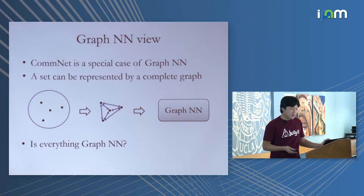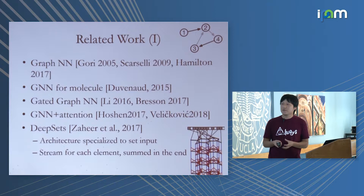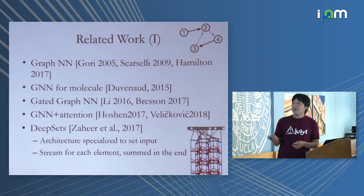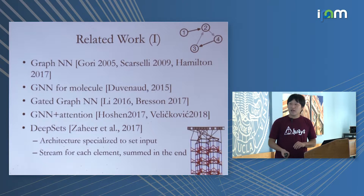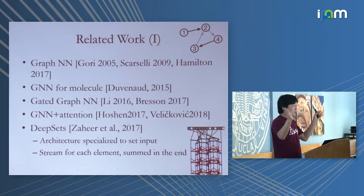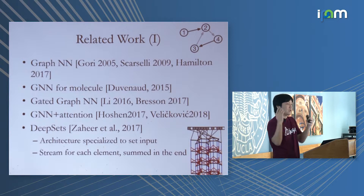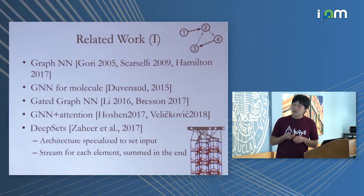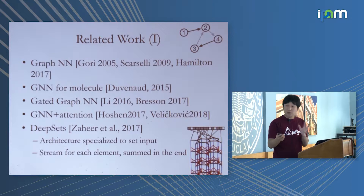Graph neural networks were first proposed around 2005 but have only recently been applied in deep learning — it's exciting to see this trend. We've seen talks about applying GNNs to molecules and large networks, and people are trying different versions where you gate the communication between nodes or apply attention over incoming communications. Attention is better than pure broadcast because it allows many simultaneous pair-to-pair conversations. The deep sets paper at this year's NIPS is also a model for processing sets.